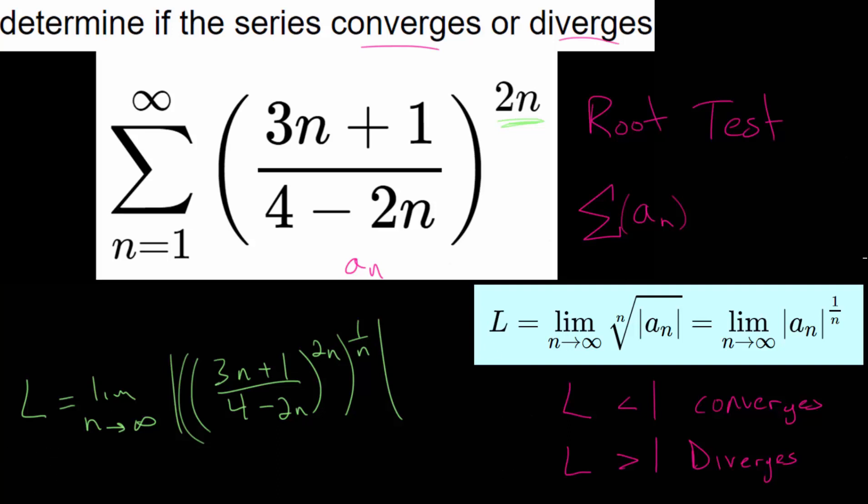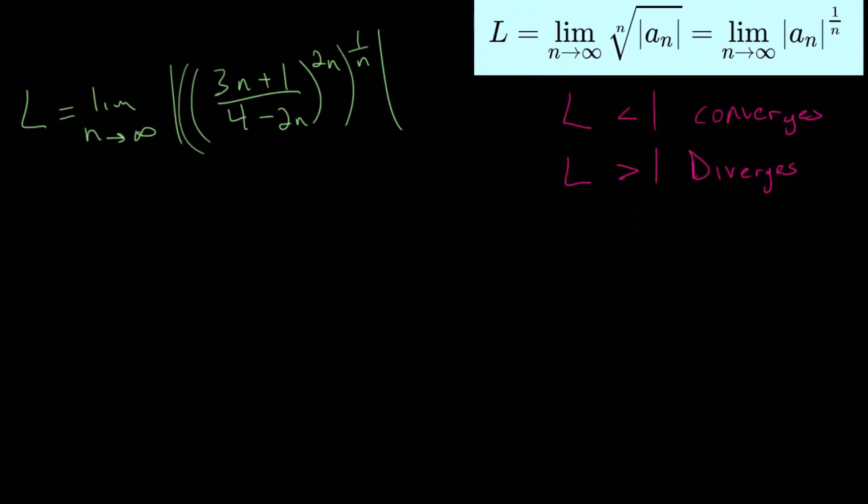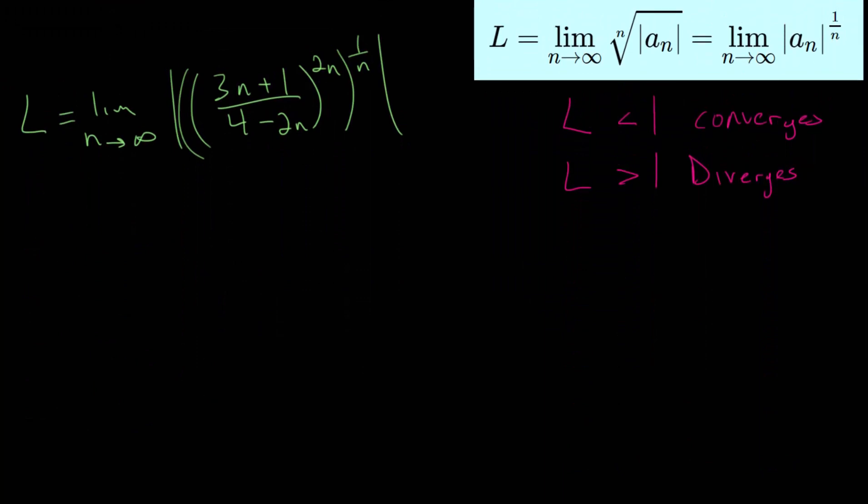So let's make a little bit of room and we can actually evaluate this limit here. L would be the limit as n goes to infinity of the absolute value of this expression. And the n's will cancel out since we'll multiply these together. We have an n in the numerator and in the denominator. And n over n is just 1. So we have 3n plus 1 over 4 minus 2n. And we're squaring that.